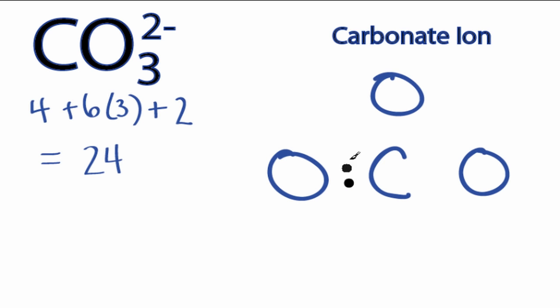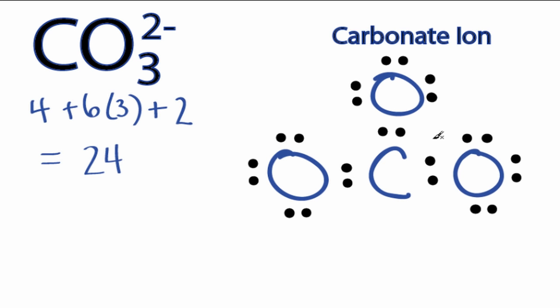We'll put 2 electrons between the atoms to form chemical bonds, we've used 6, and then around the oxygens, 8, 10, and 24. So we've used all 24 valence electrons.